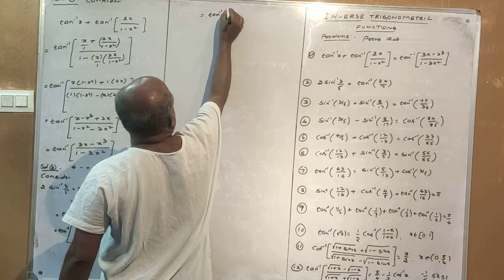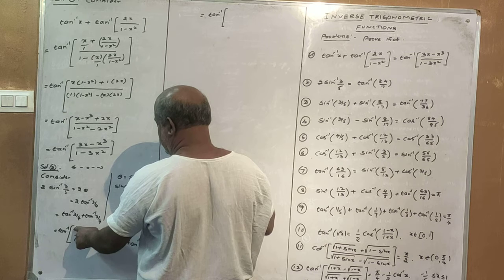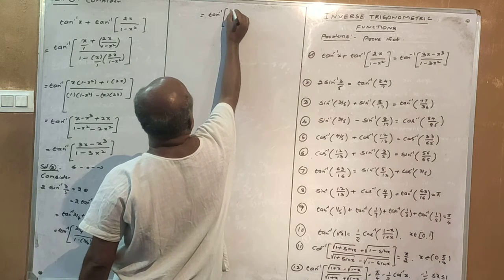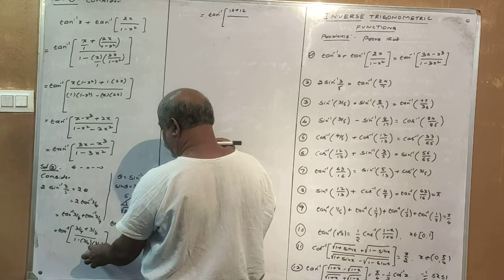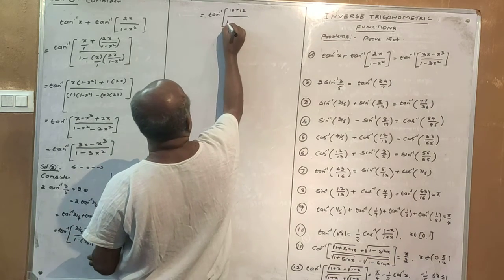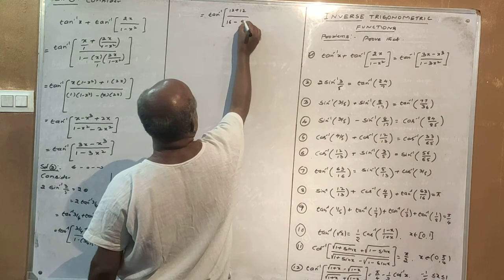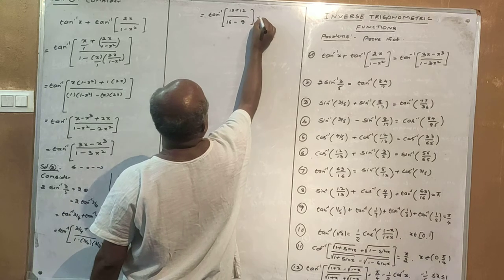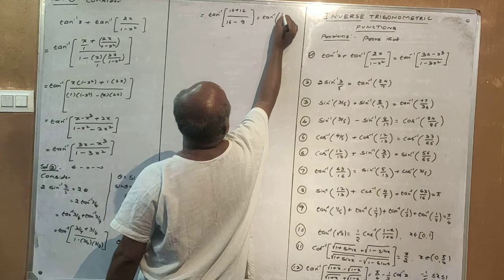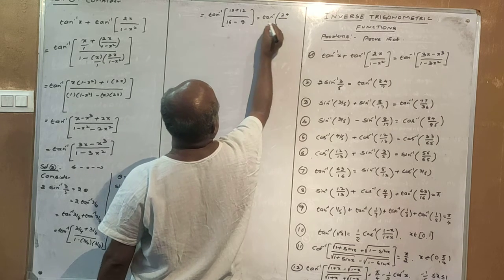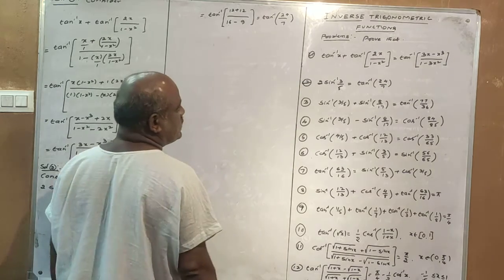Calculating the numerator: 3 by 4 plus 3 by 4 equals 6 by 4. Denominator: 1 minus 9 by 16 equals 7 by 16. So the result is tan inverse of (6 by 4) divided by (7 by 16), which simplifies to tan inverse 24 by 7. That is the solution for problem 2.